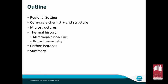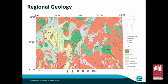As a brief outline, I'll talk very briefly about the regional setting, then look at some of the variations at the core scale — the centimeter scale — in the chemistry of samples from Nunasvara, then look in more detail at the microstructures and the metamorphic history and its implications for the graphite, and discuss the carbon isotopes and how they compare to other deposits.